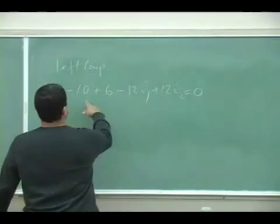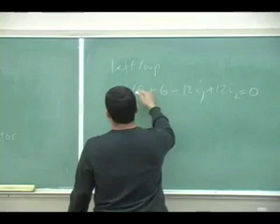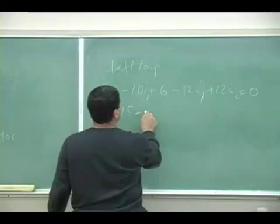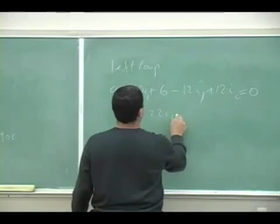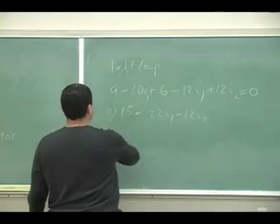And you would get... No, I forgot the I1 here, 10I1. So you would get 15 is equal to 22I1 minus 12I2. That's my first equation.